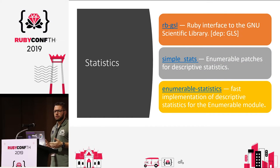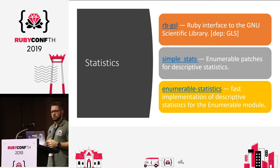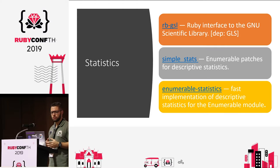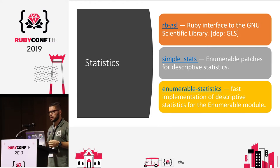We have many libraries for statistics — none of these lists is complete, just the more important ones that I have tested. We have RB-GSL, the interface for the GNU Scientific Library, which I think is one of the most used scientific libraries in the world. I really like Enumerable Statistics, also written by Kenta Murata — a really fast way to do simple calculations on any enumerable, like an array or an ActiveRecord result set.